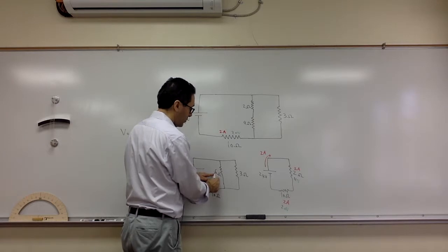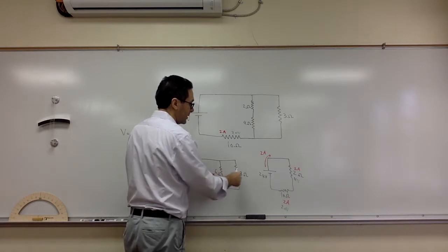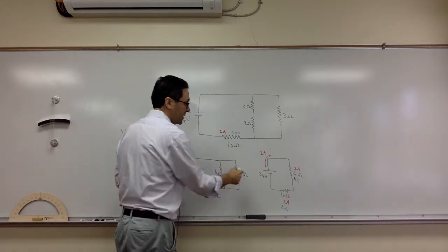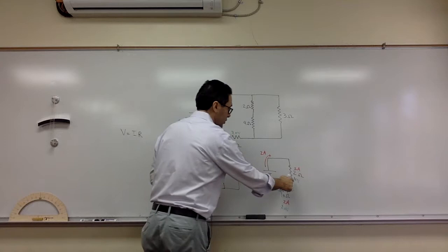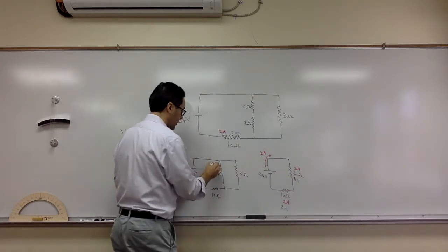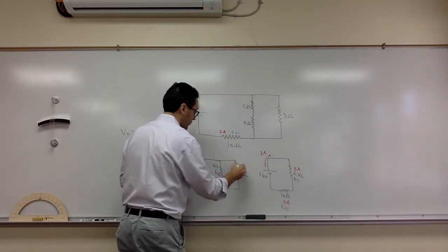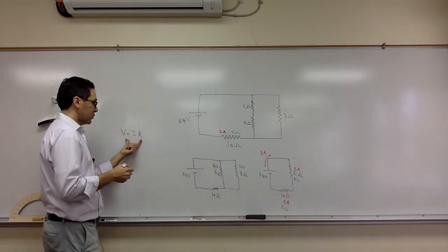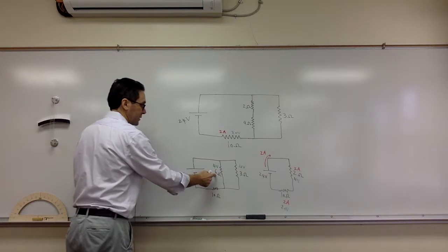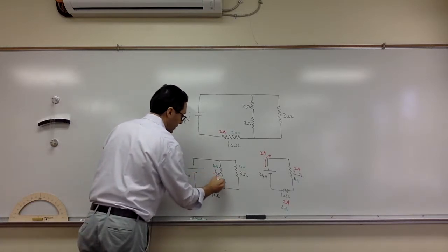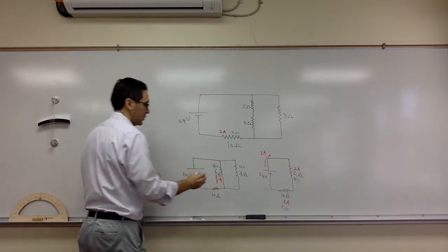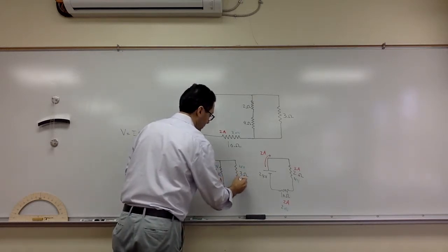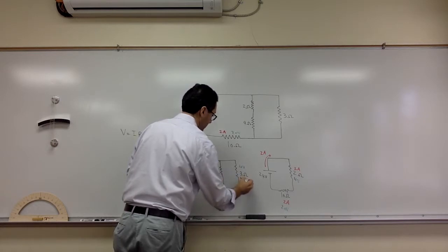The six ohms and the three ohms combined give you the two ohms. Now they are in parallel, which means they share the same voltage, and that voltage is four volts. So this one gets four volts and this one gets four volts. For the current, you do V equals IR — four divided by six.